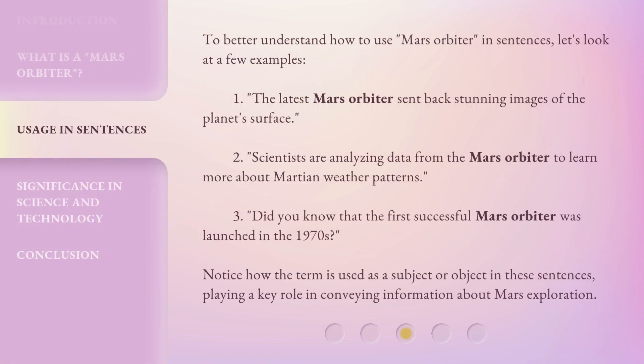To better understand how to use 'Mars Orbiter' in sentences, let's look at a few examples. The latest Mars Orbiter sent back stunning images of the planet's surface. Scientists are analyzing data from the Mars Orbiter to learn more about Martian weather patterns. Did you know that the first successful Mars Orbiter was launched in the 1970s? Notice how the term is used as a subject or object in these sentences, playing a key role in conveying information about Mars exploration.